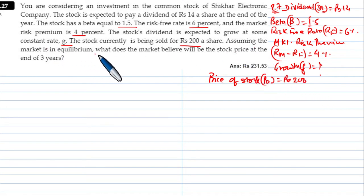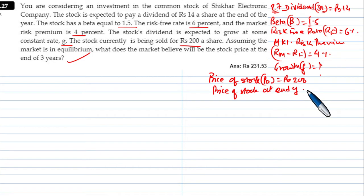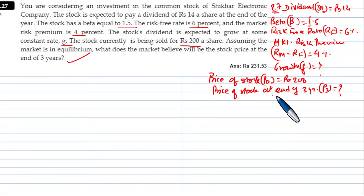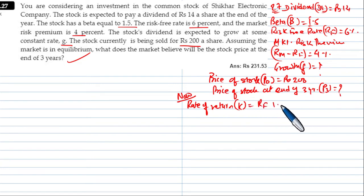Assuming the market is in equilibrium, what will be the stock price at the end of year 3? First, find the required rate of return k using the CAPM model: k = RF + (RM - RF) × beta. RF is 6%, so k = 6 + 4 × 1.5 = 12%.